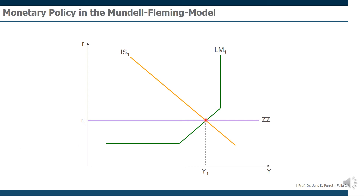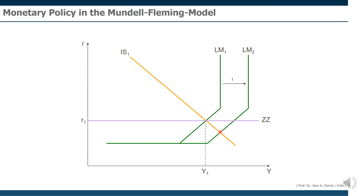The first step is the monetary policy itself. We're only considering expansionary policy here, because restrictive policy would be the exact same thing from an opposite perspective — just turn the arguments around. With expansionary monetary policy, the money supply increases, which will move our LM curve to the right. We get a new LM curve to the right of the original one, giving us a new domestic equilibrium at the intersection of the IS and LM curves.